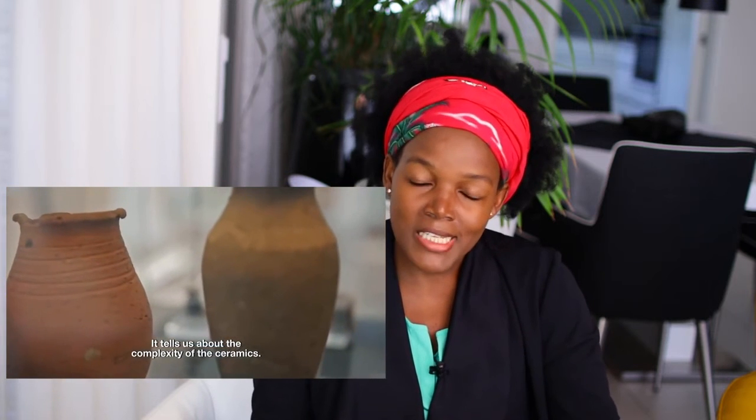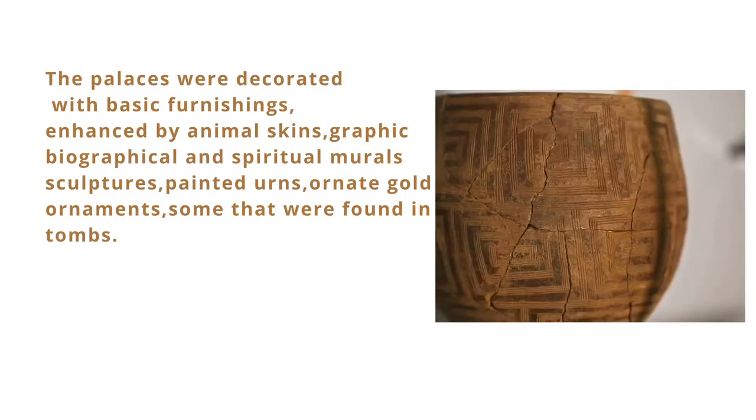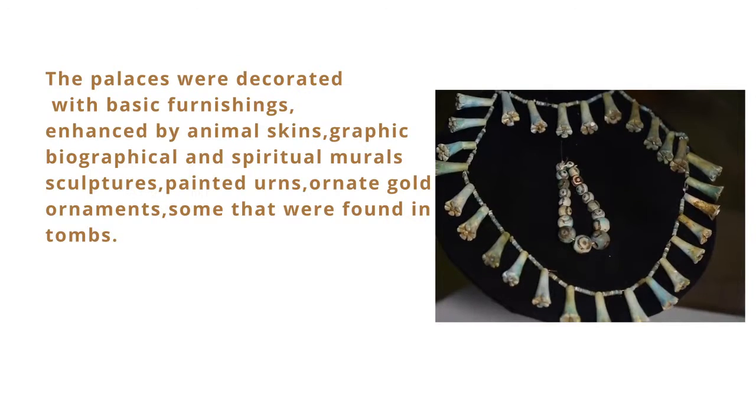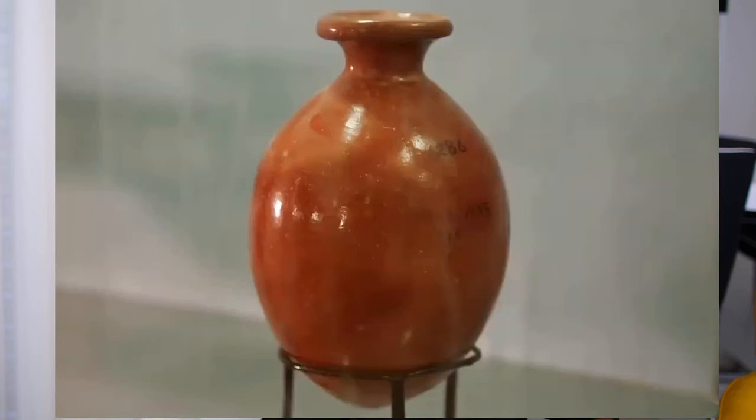Accents also include hand-woven baskets, wooden bowls, stone artifacts, and richomas. I think mostly people believe that when you say African interiors it's directed only toward ritual masks. I don't think if you want an African aesthetic you should be forced to go with masks — you can just choose other elements that don't include masks. All in all, the palaces were decorated with basic furnishings enhanced by animal skins, biological and spiritual murals, craft chairs, painted arts, and ornate gold ornaments. It's found in tombs, and even today people dig up tombs hoping to find gold.